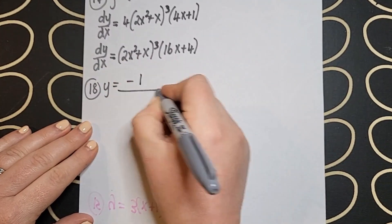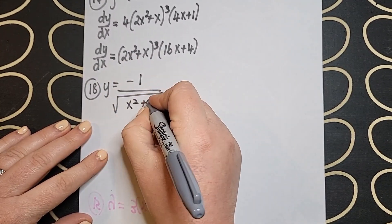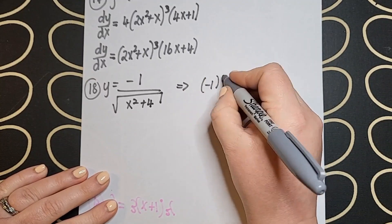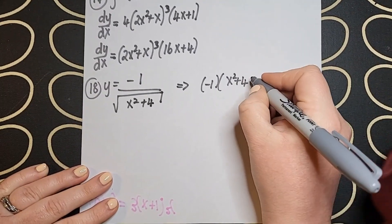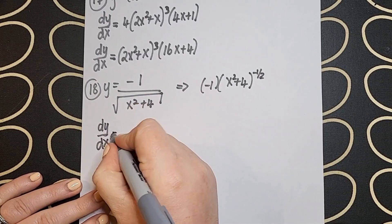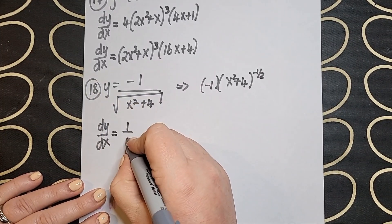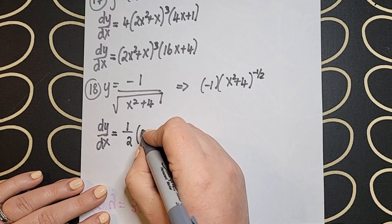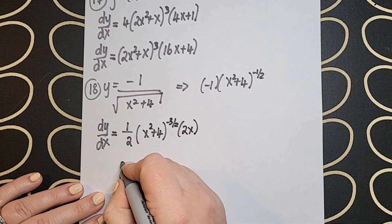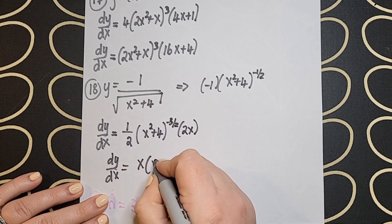So down in question 18 there the bottom of that line is the square root of x squared plus 4. So what I do is I write that to the power of a half and then I bring it up on the line which means it's the power of minus a half. And then I go ahead and I use my chain rule on that. Again be careful you've got fractions in your powers there which can make it a little bit more tricky. But again take your time step by step and you'll be fine.